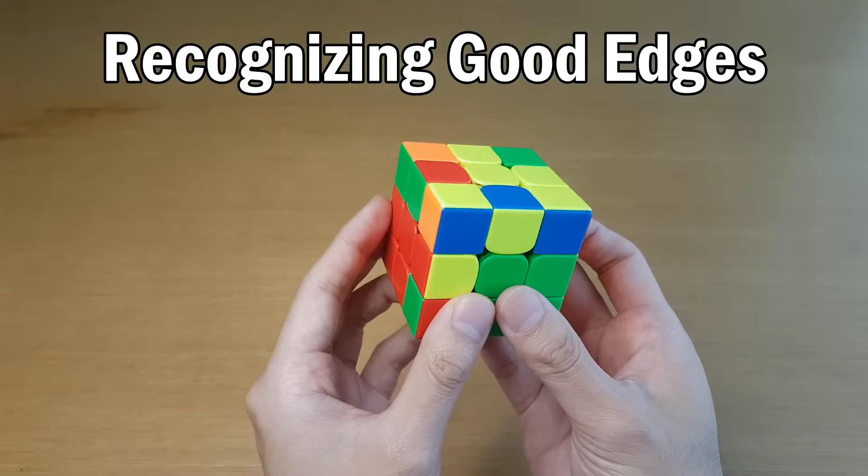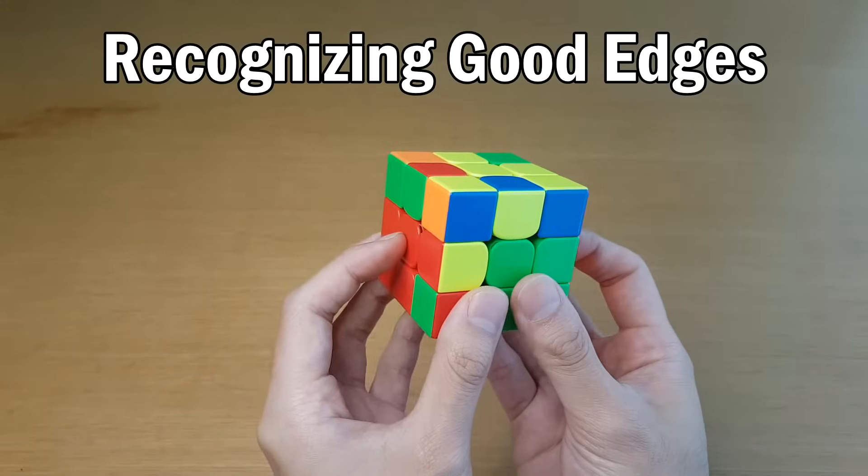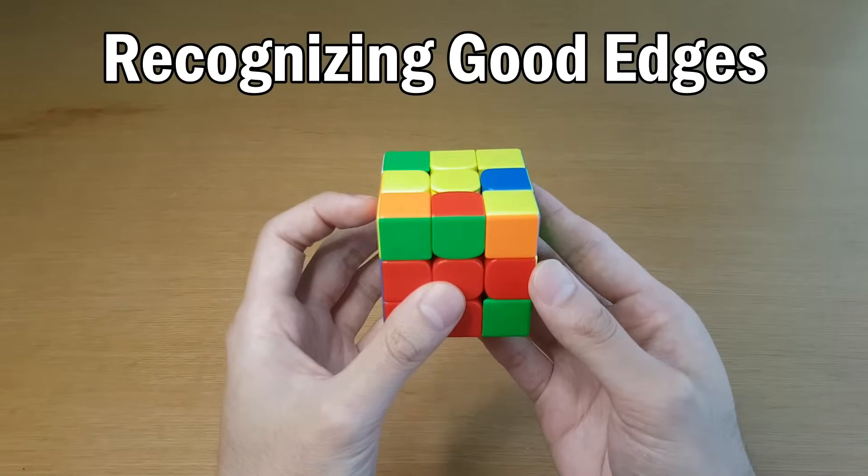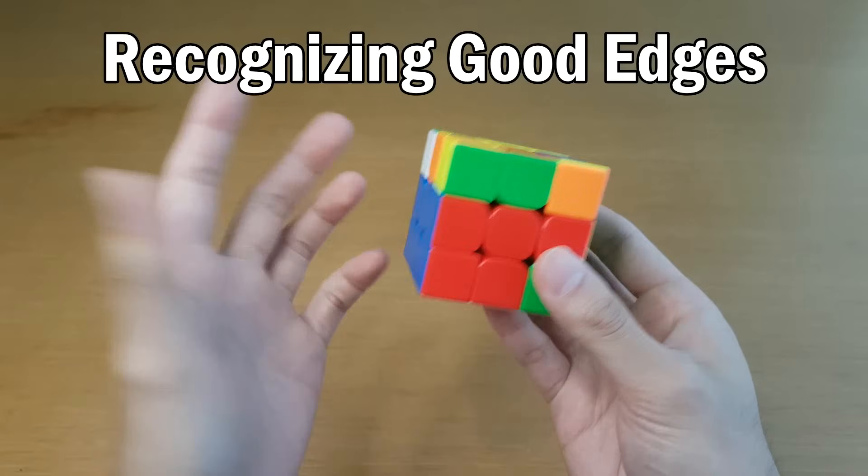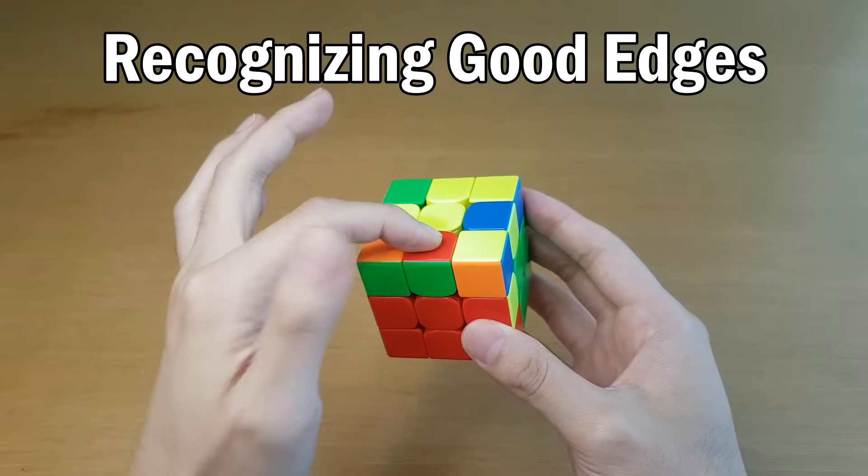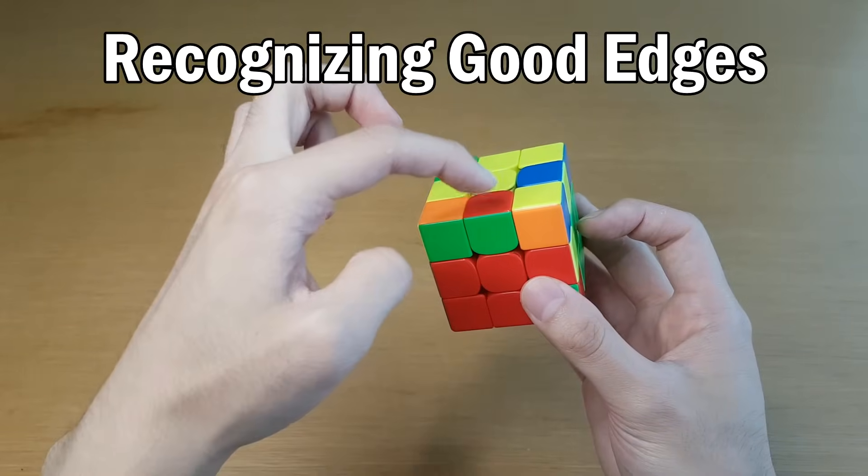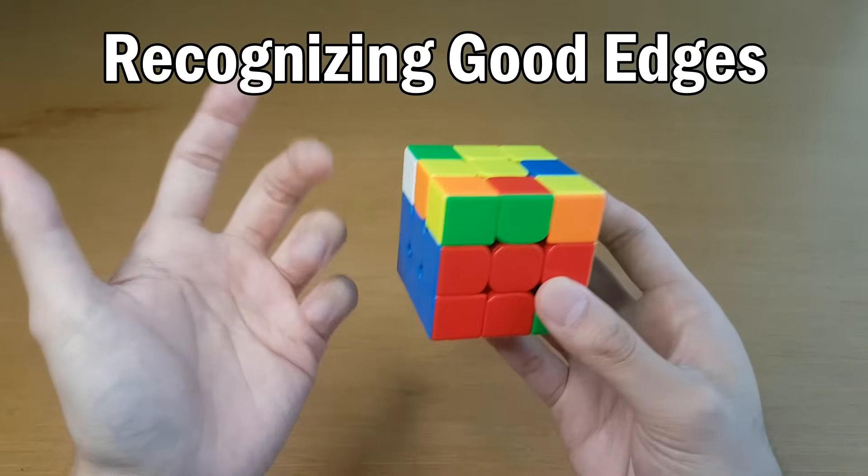If it does not, like if I do a cube rotation, this green no longer matches one of the side centers. It is now a bad edge, and I need to do a cube rotation in order to fix that. The other thing you can do is see if the top color matches the front or back center. You can use either technique, side matches side, or top matches front back, to know if it's a good edge.